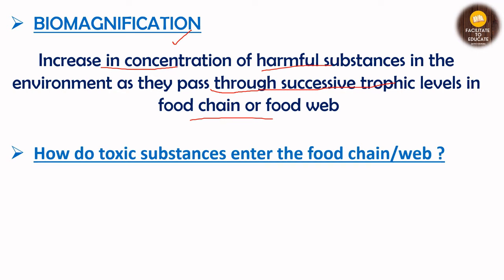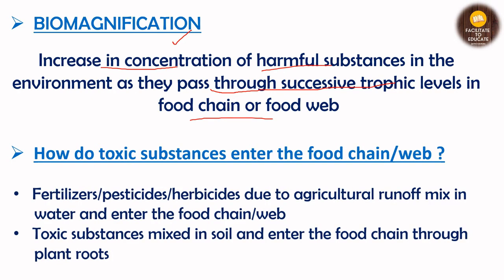How do toxic substances enter the food chain? Fertilizers, pesticides, and herbicides, due to agricultural runoff, mix into water and enter the aquatic food chain through the aquatic producer. Additionally, toxic substances mixed into soil — from fertilizers, pesticides, herbicides, or heavy metals — enter the terrestrial food chain through plant roots. So there are two entry modes: through the aquatic food chain or through the terrestrial food chain.